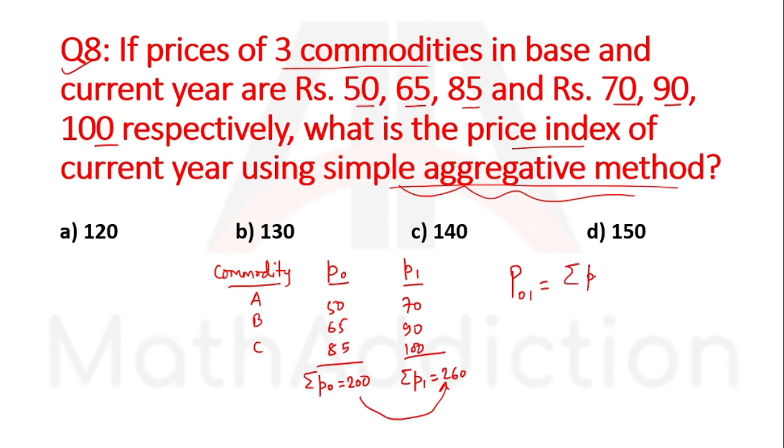Current year prices P1 are 70, 90, 100. Total is 260. Price index equals current year total divided by base year total times 100. So 260 divided by 200 times 100 equals 130. Option B is the right answer.